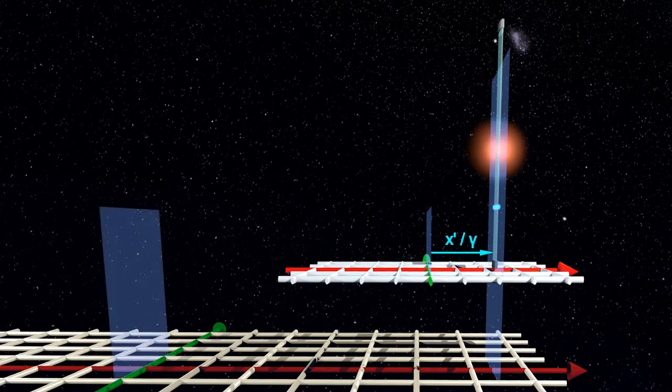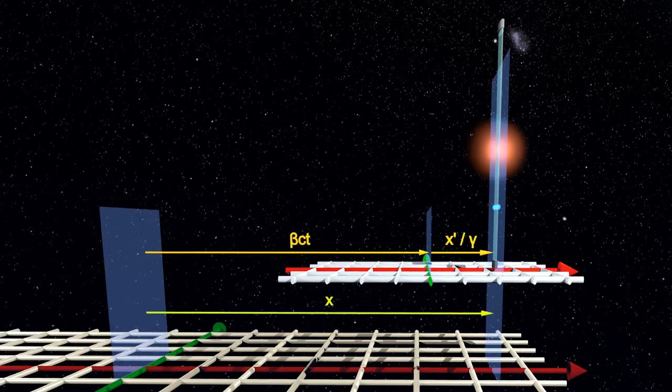And the stationary frame coordinate amounts to the sum of the relative displacement itself, plus the length contracted coordinate from the moving frame.